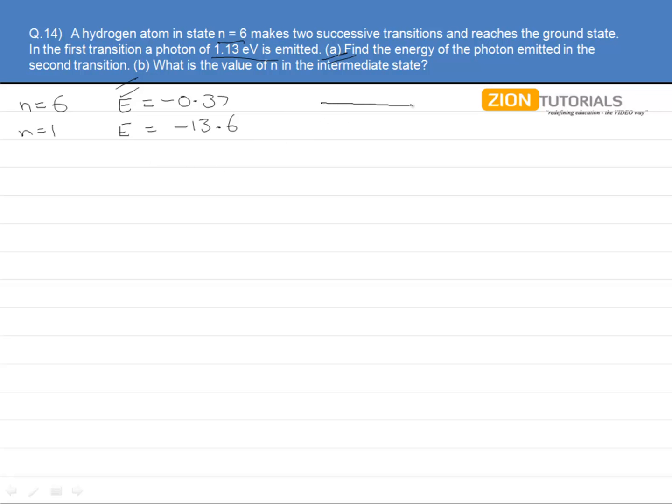Now, if we take this n to be 6, this to be the ground state and this to be the intermediate state.